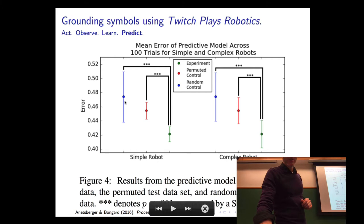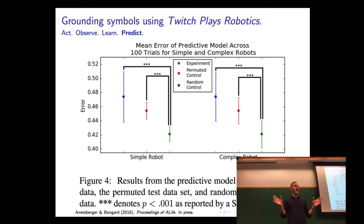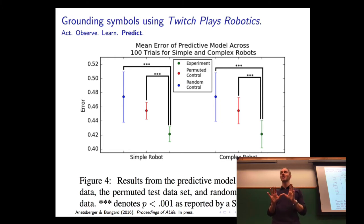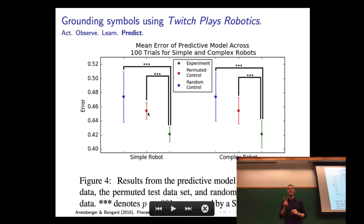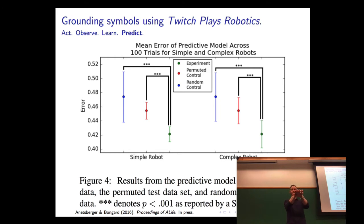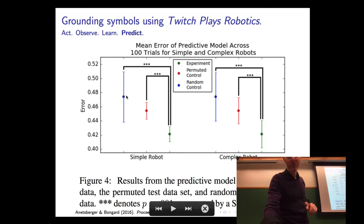The second control experiment — the random control (blue) — assumed the crowd were all trolls, giving random pluses or minuses at the flip of a coin. As you'd expect, performance is poor. The fact that green did significantly better than red or blue tells us two things: first, people were mostly providing honest signals — when the command was 'jump' and the robot did something jump-like, most people would say yes; when it didn't, most people said no. If we weren't getting honest signals, green would be at the same height as blue.